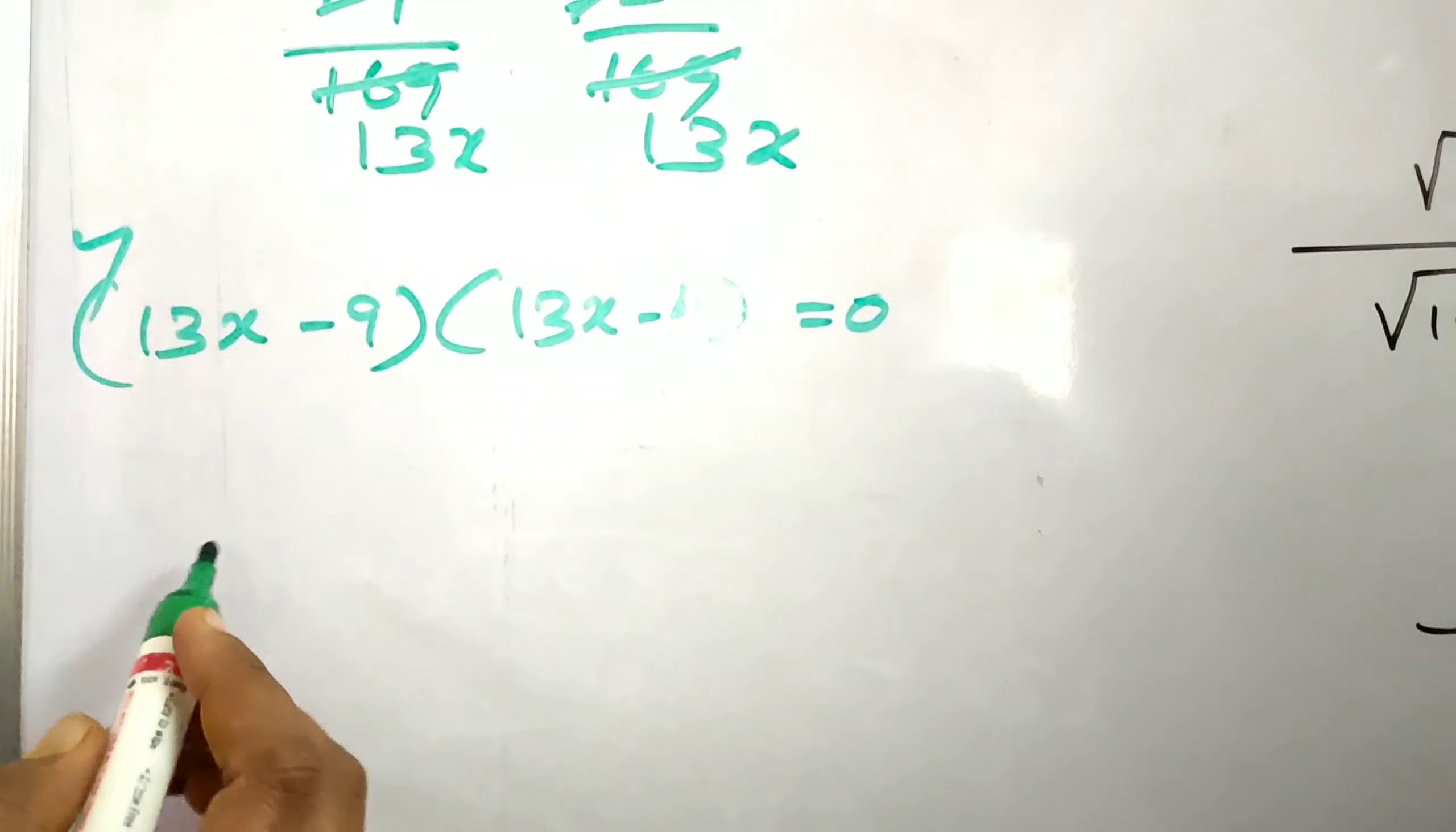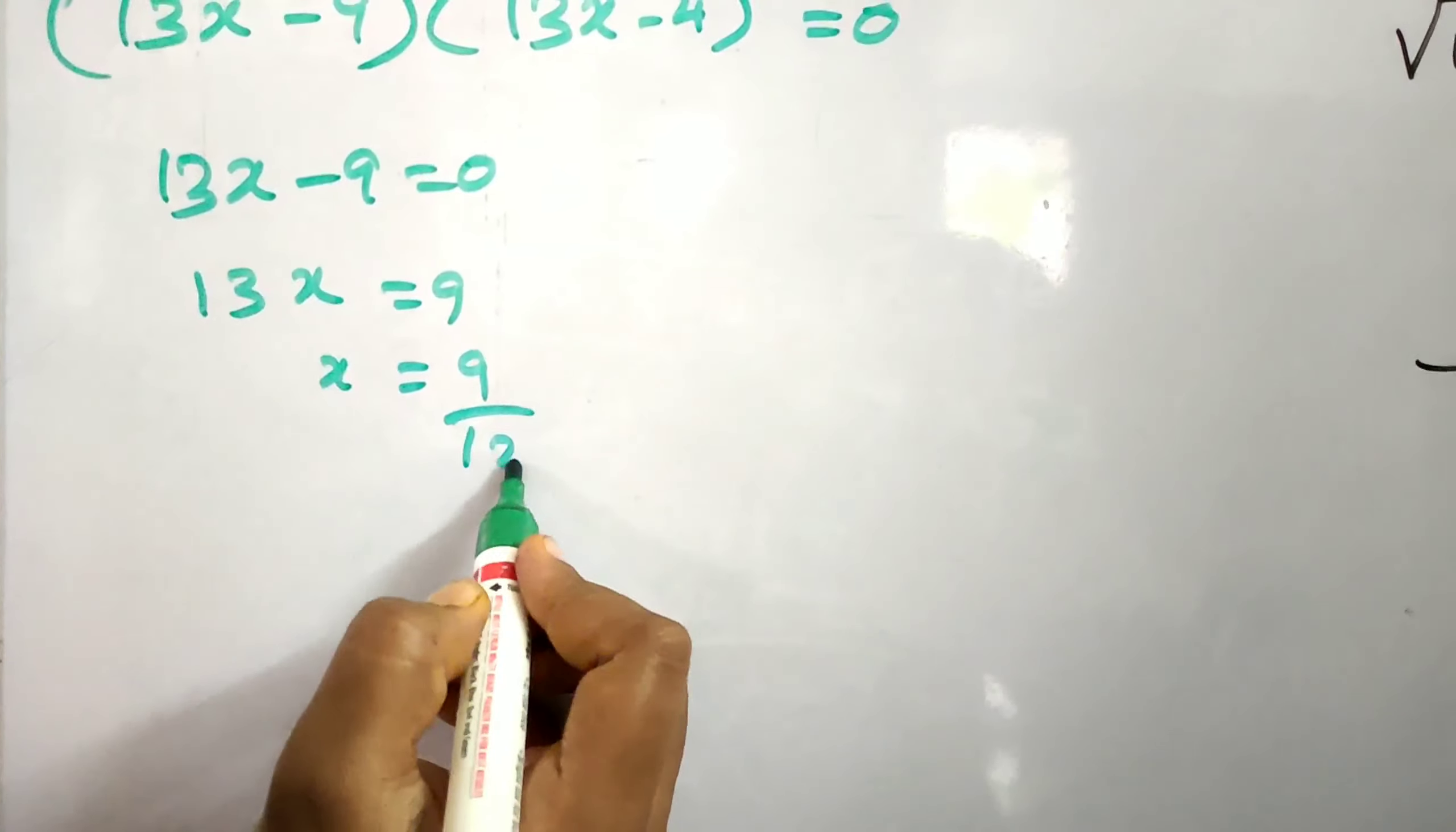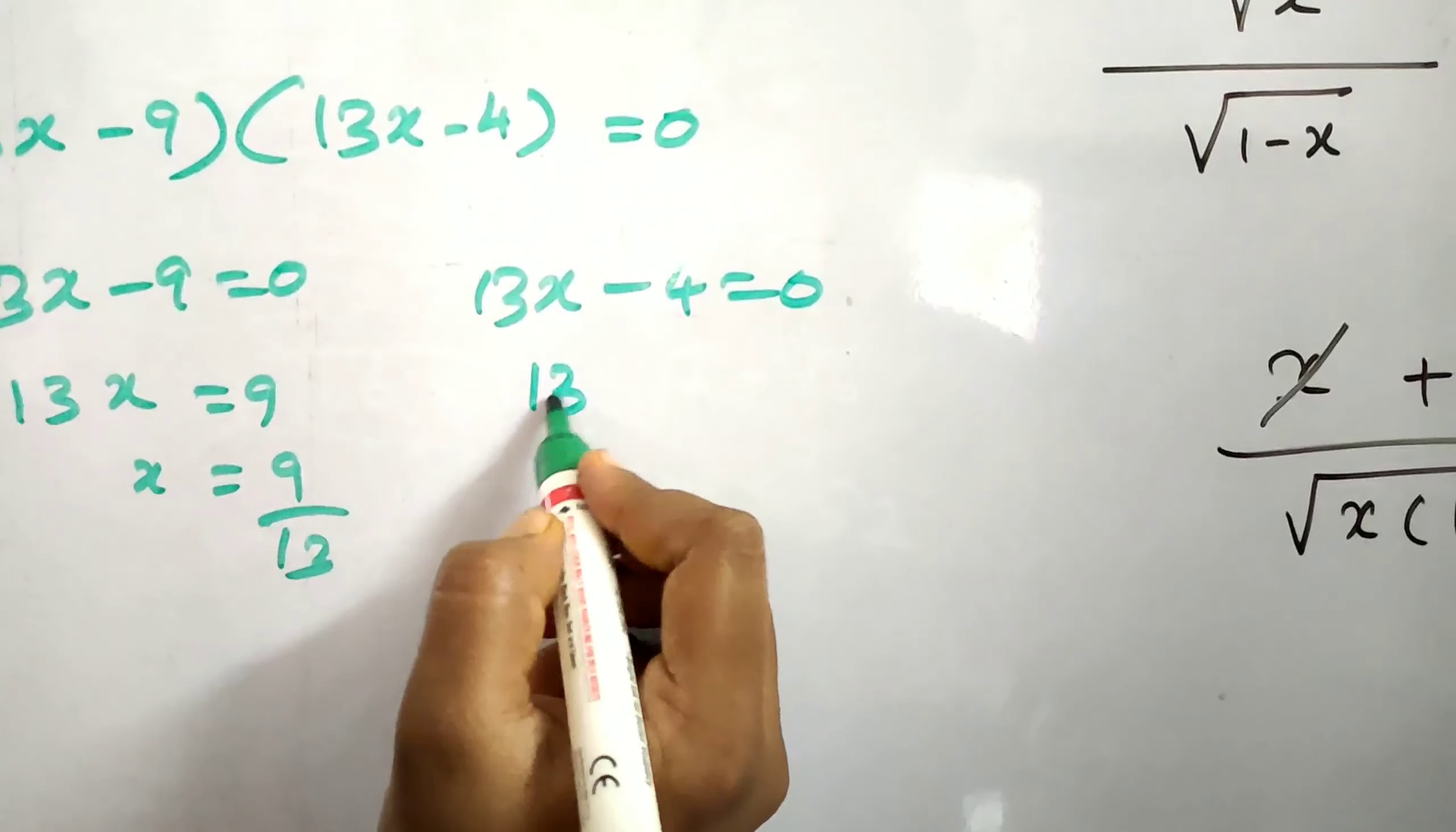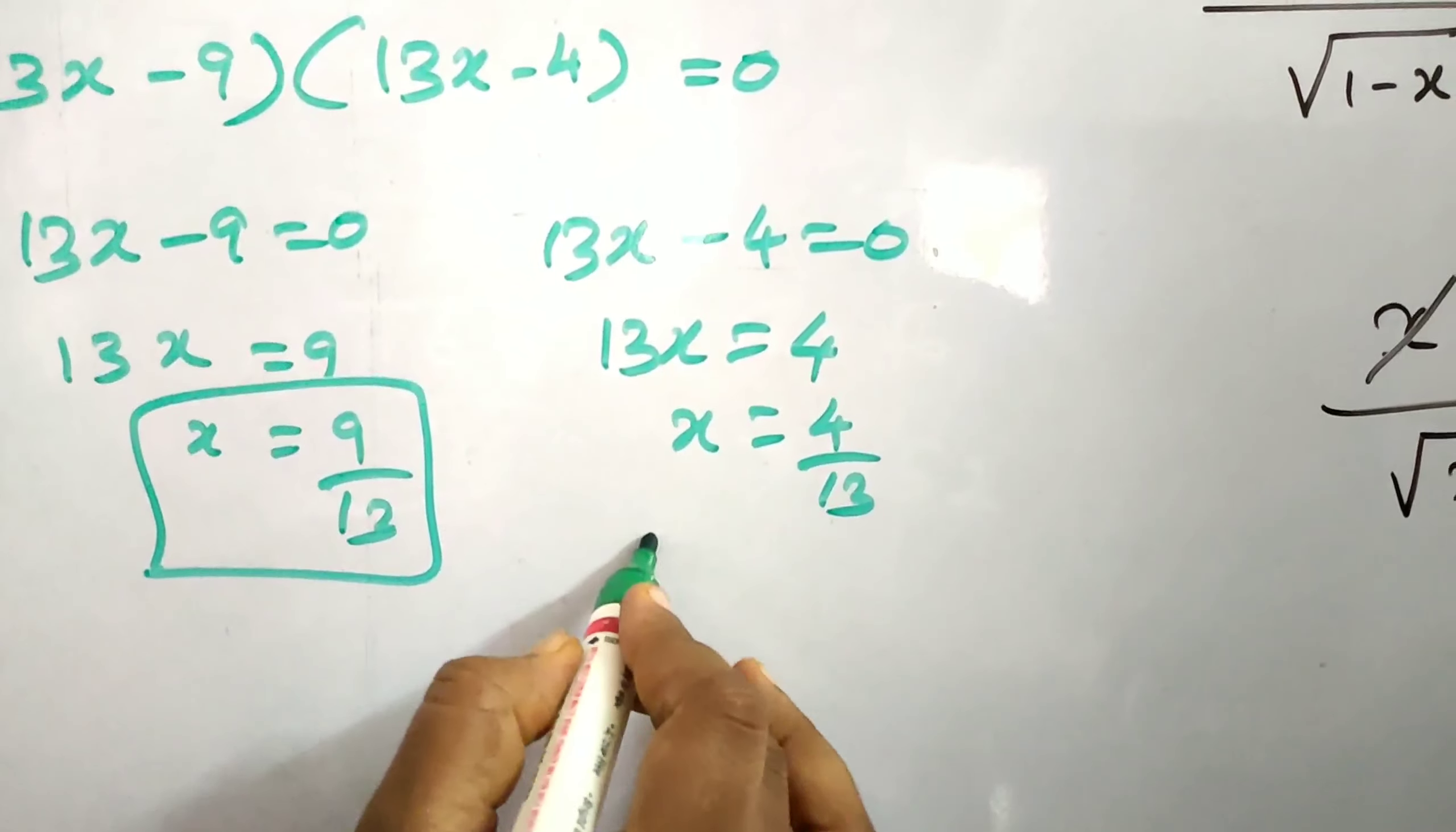Factorize this term. 13x minus 9 equals 0 means 13x equals 9, x equals 9 by 13. Here 13x minus 4 equals 0 means 13x equals 4, x equals 4 by 13. This is our book back answer.